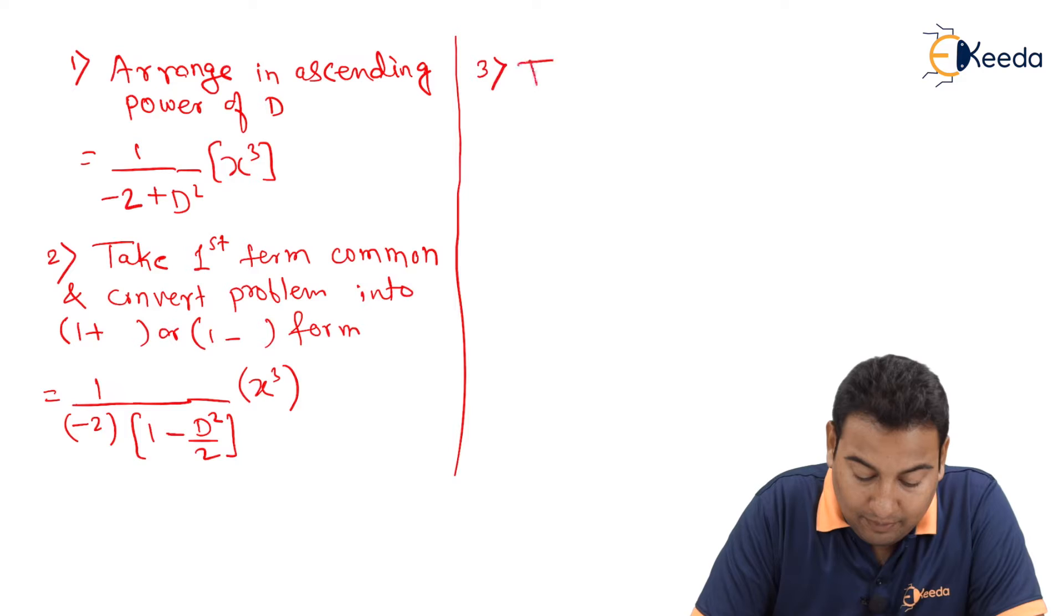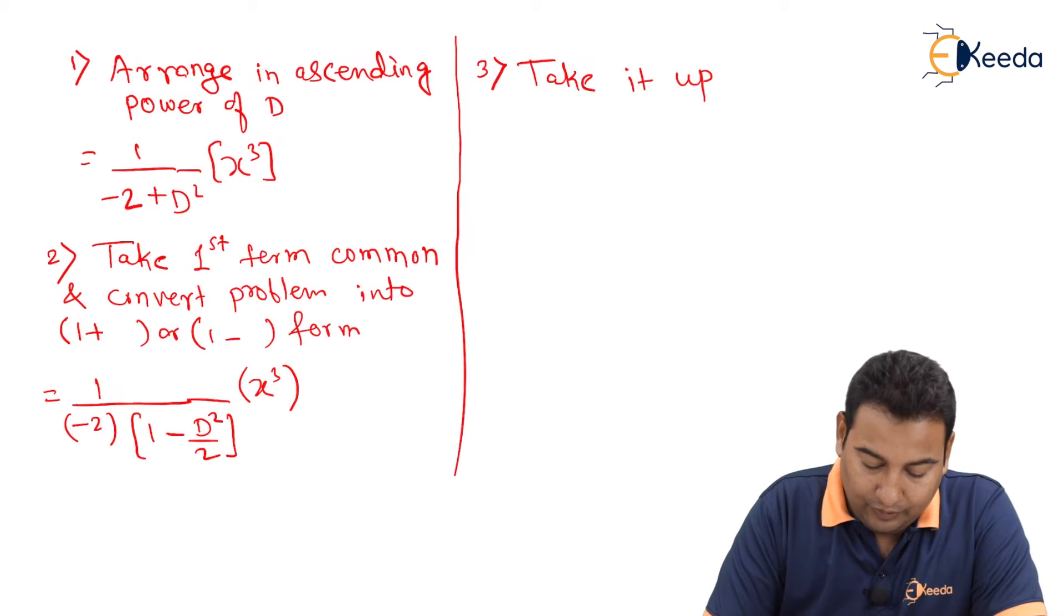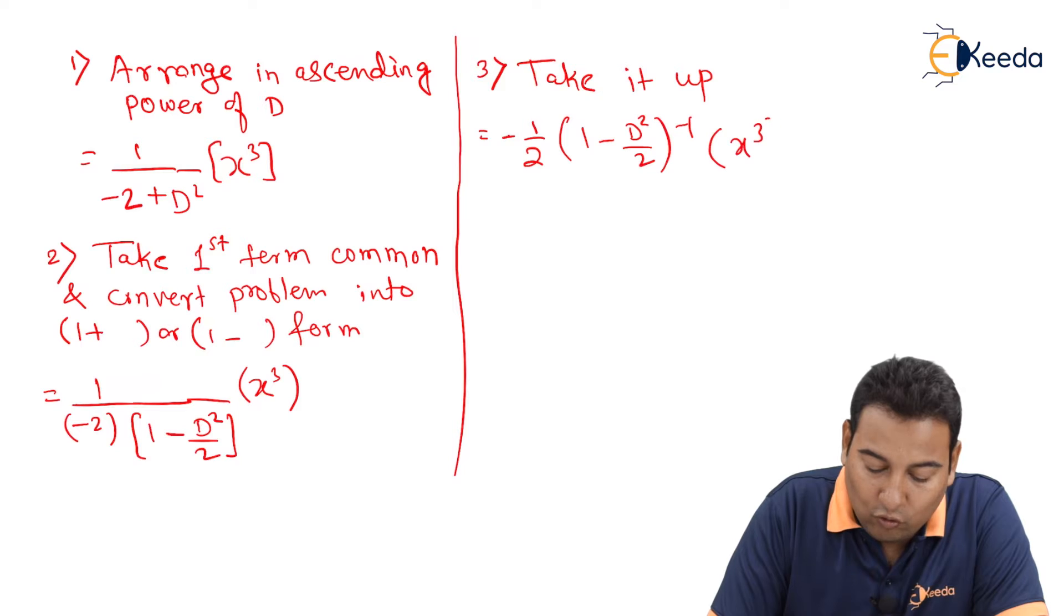Take it up. The next step is you need to take it into the numerator. Minus 1 upon 2. This will go up and will become inverse. Here it is x cube. What next? Expand.